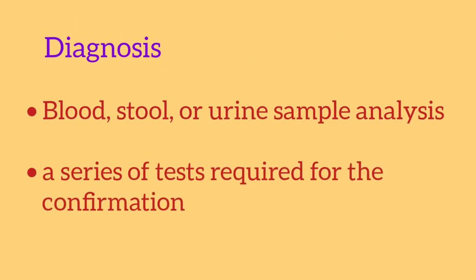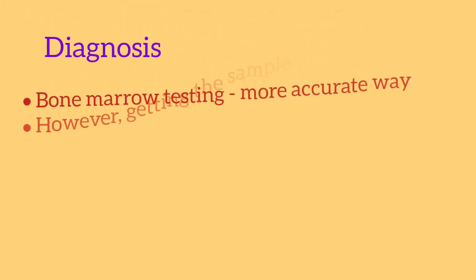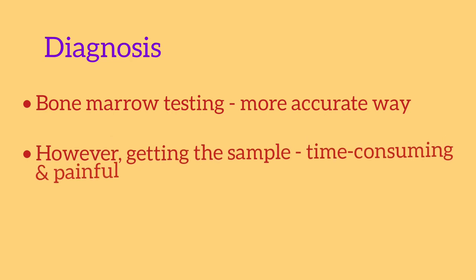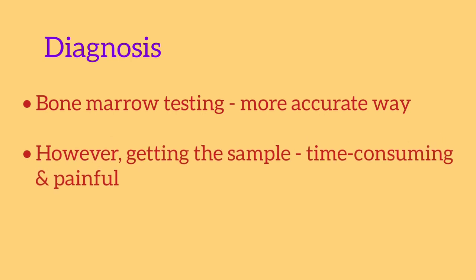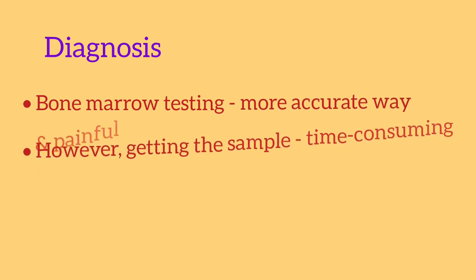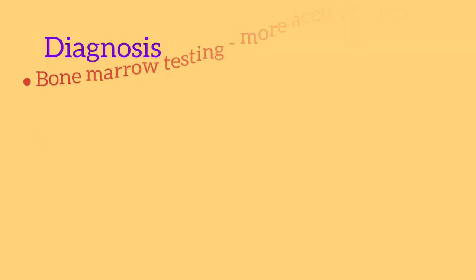Diagnosis of typhoid fever can usually be confirmed by analyzing samples of blood, stool, or urine. The bacteria aren't always detected the first time, so you may need to have a series of tests. Testing a sample of bone marrow is a more accurate way of diagnosing typhoid fever, but getting the sample is both time-consuming and painful, so it's usually only used if other tests are inconclusive. If typhoid fever is confirmed, other members of your household may also need to be tested in case you have passed the infection on to them.